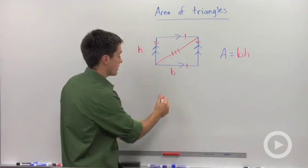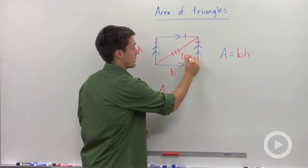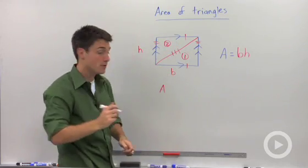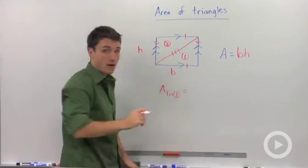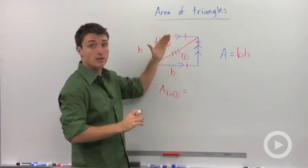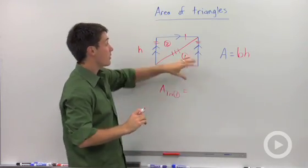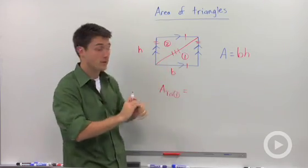Which means if we wanted to calculate the area, I could call this triangle 1 and triangle 2. If I wanted to calculate the area of triangle 1, I could say that it's equal to the area of the whole triangle divided in half. Excuse me, the area of the whole parallelogram divided in half.